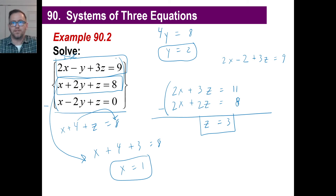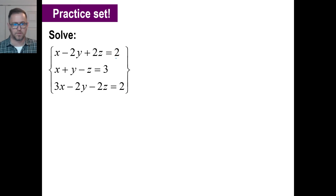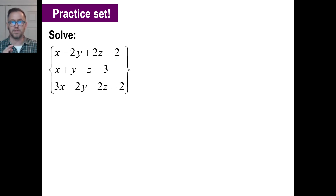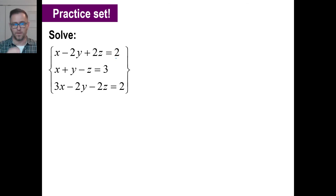Whatever is easiest — that's what you should do. Now try this practice problem. Go ahead and solve it. Let's all start by getting rid of the z's, just so we're on the same page. Take any two equations — I'd take the top and the bottom equations first, add those together to get rid of the z's, giving yourself an x and y equation. Then we'll work on another equation.